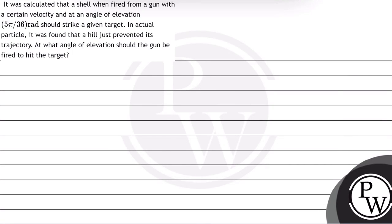Hello Bacho, let's read this question. The question says, it was calculated that a shell when fired from a gun with a certain velocity at an angle of elevation